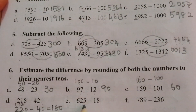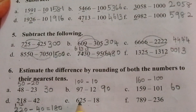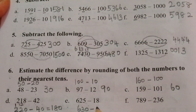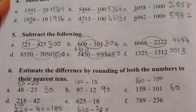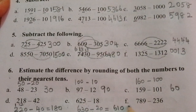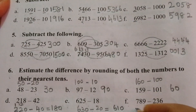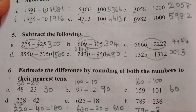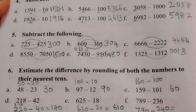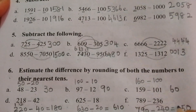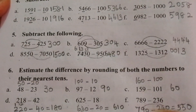E: Six hundred twenty-five minus eighteen — six hundred twenty-five is nearest to six hundred thirty, eighteen is nearest to twenty, so six hundred thirty minus twenty is six hundred ten. F: Seven hundred eighty-nine minus two hundred thirty-six — seven hundred eighty-nine is nearest to seven hundred ninety, two hundred thirty-six is nearest to two hundred forty. Zero minus zero is zero, nine minus four is five, seven minus two is five — the answer is five hundred fifty.